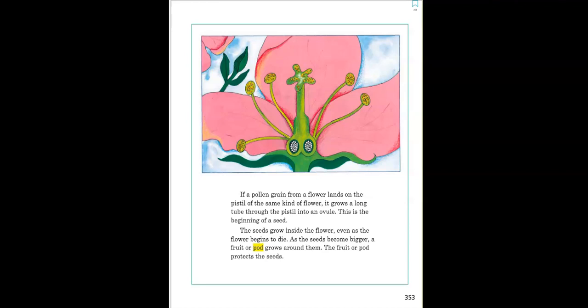The seeds grow inside the flower even as the flower begins to die. As the seed becomes bigger, a fruit or pod grows around them. The fruit or pod protects the seeds.